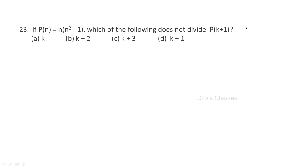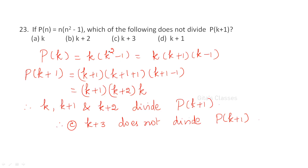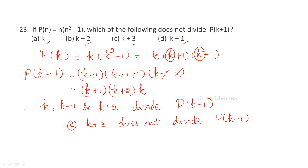Next: P(n) is given. Which of the following does not divide P(k+1)? P(k) = k(k² - 1) = k(k+1)(k-1). P(k+1): replace every k with k+1. So P(k+1) = (k+1)(k+2)(k). Therefore the factors are k, k+1, and k+2. Since k+3 is not a factor, k+3 does not divide P(k+1).